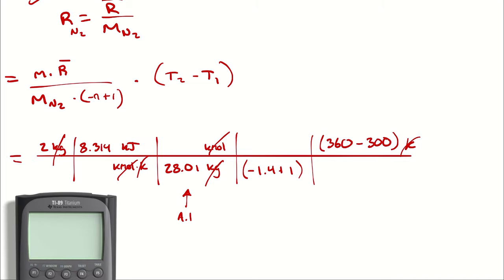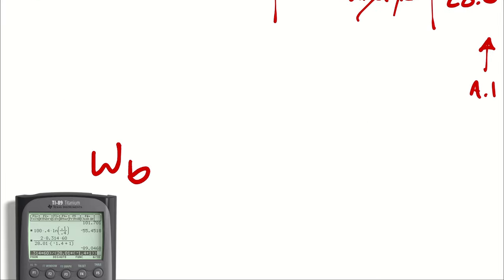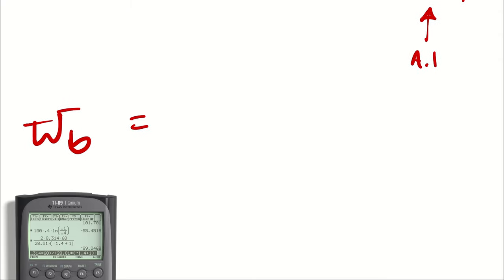So calculator, if you would please, what is 2 times 8.314 times 60 divided by 28.01 times negative, which is a different number on my calculator, plus 1. So I get negative 89.0468. So boundary work is equal to negative 89.05, let's call it, kilojoules.